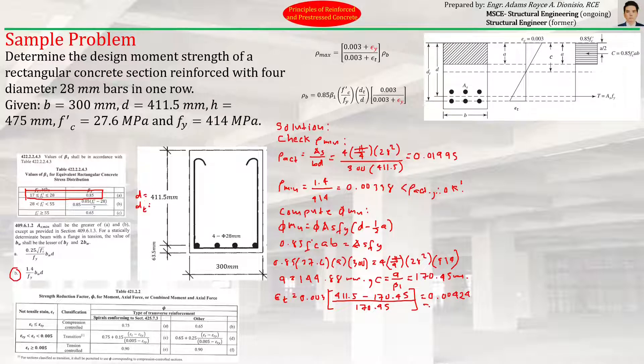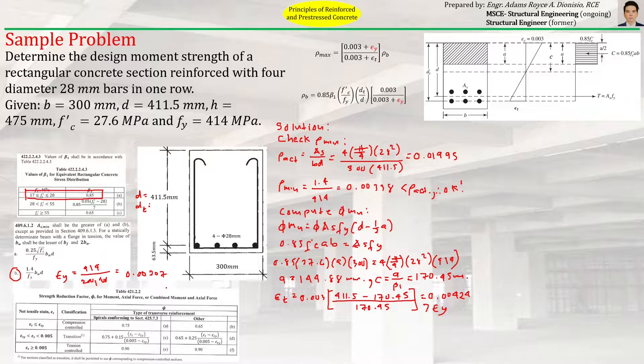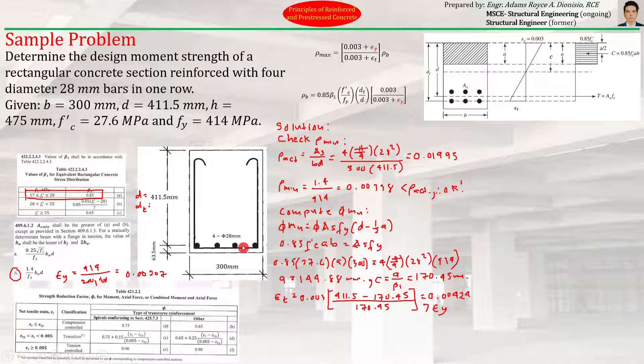Which is definitely greater than strain y, where εy equals 414 over 200,000 MPa, which equals 0.00207. Therefore, we can verify that the tension steel will yield. So it's correct that we used fy as the stress.